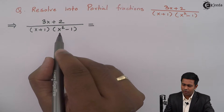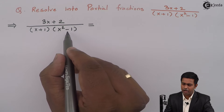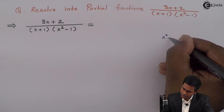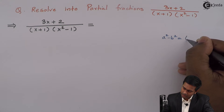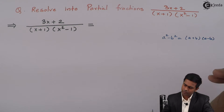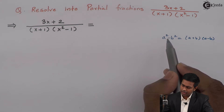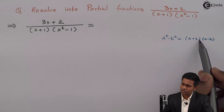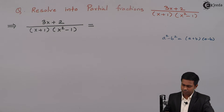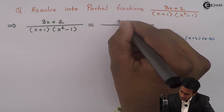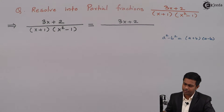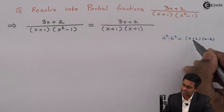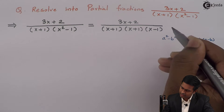If we observe the second bracket, we have x² - 1. We can apply the formula a² - b² = (a + b)(a - b). Assuming a = x and b = 1, x² - 1 becomes (x + 1)(x - 1). So the expression becomes (3x + 2) upon (x + 1)(x + 1)(x - 1).